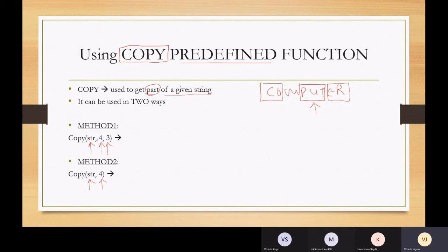Let's look at what each parameter does in the first method. Copy STR - STR is referring to your string, the string that you are copying from. The four is the position where you want to start copying from.